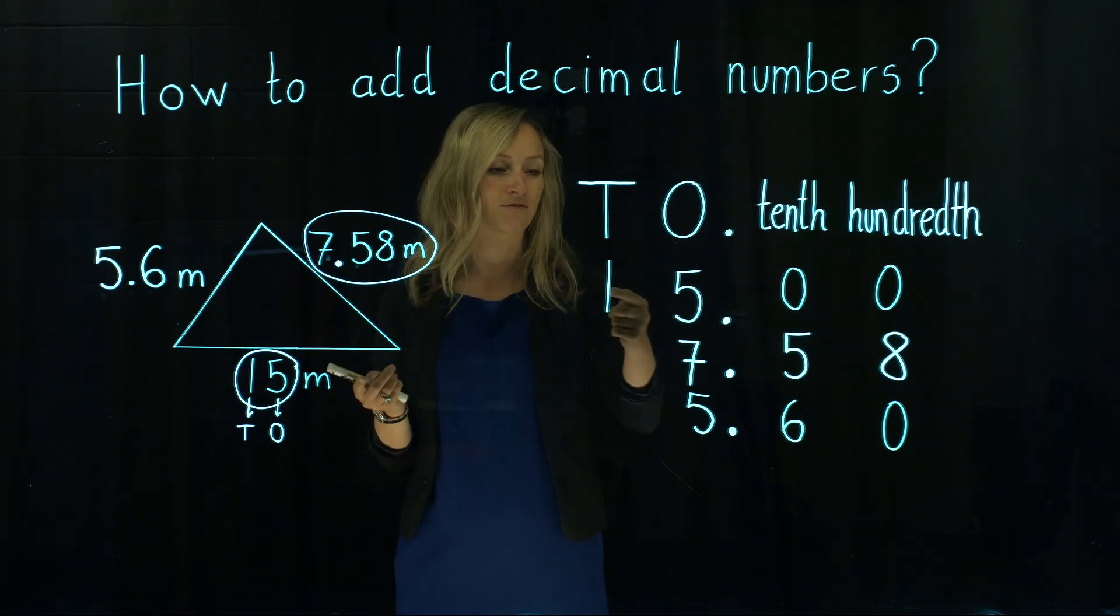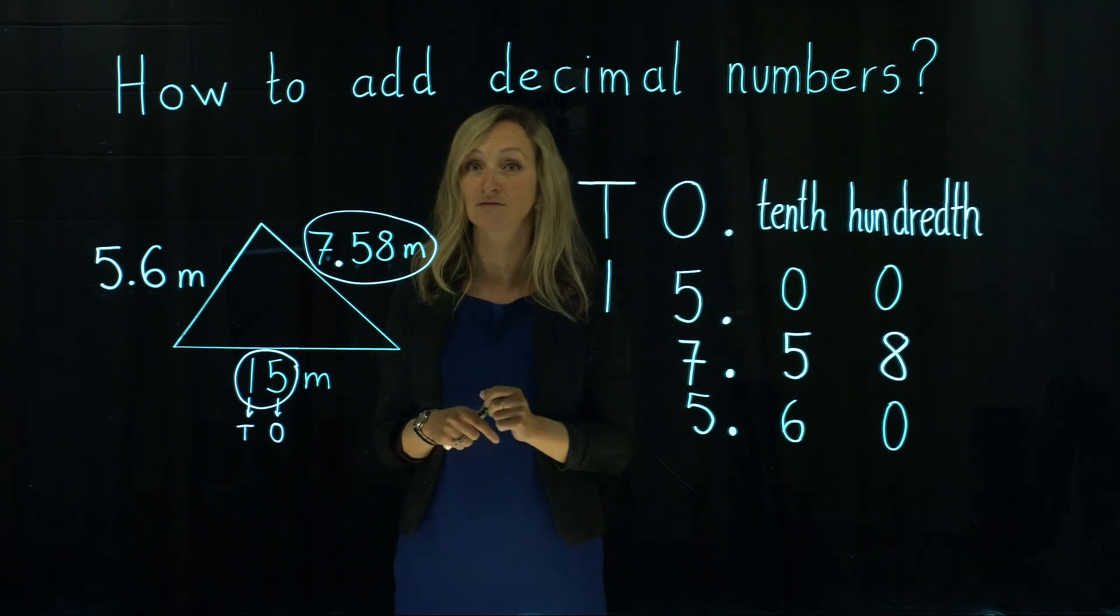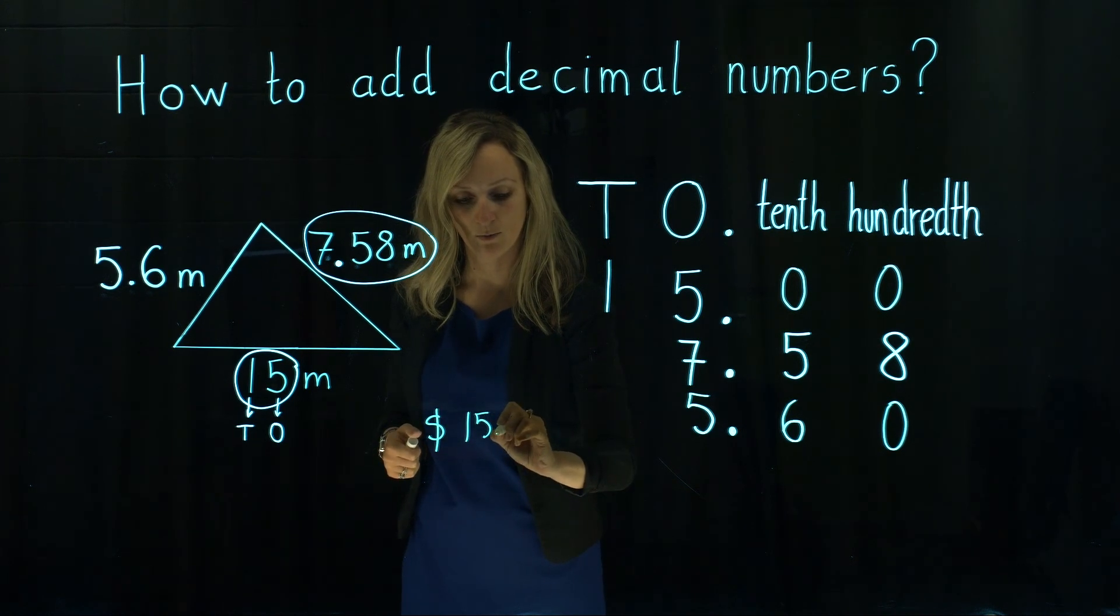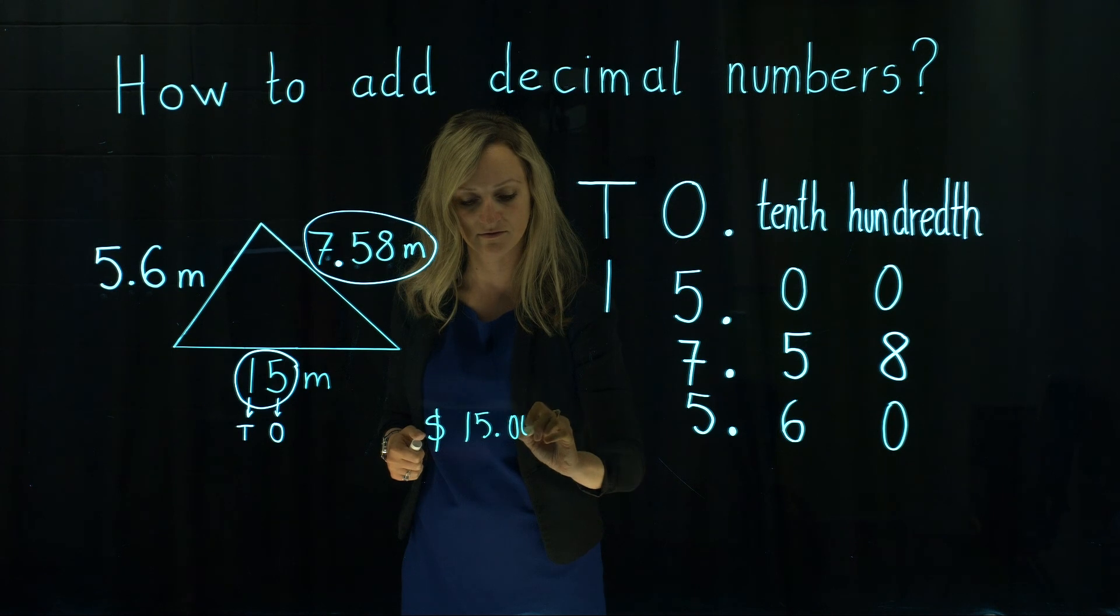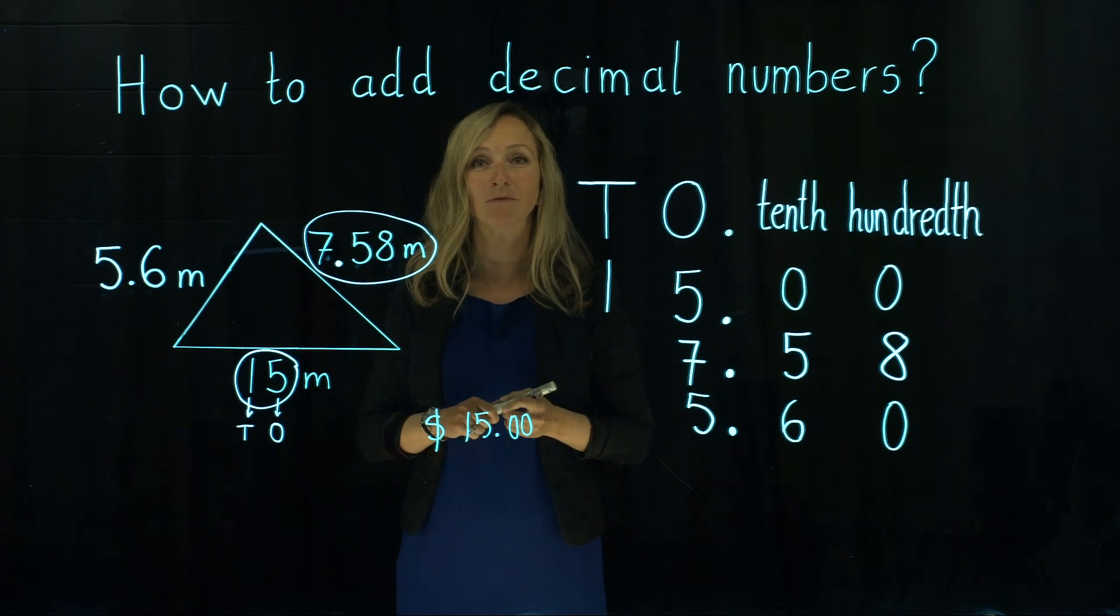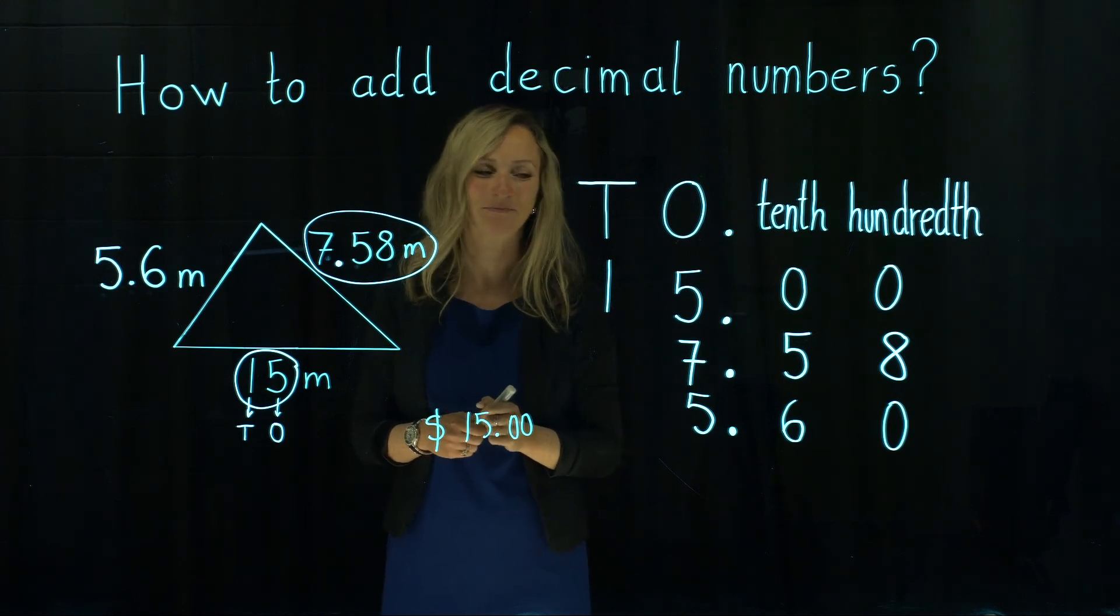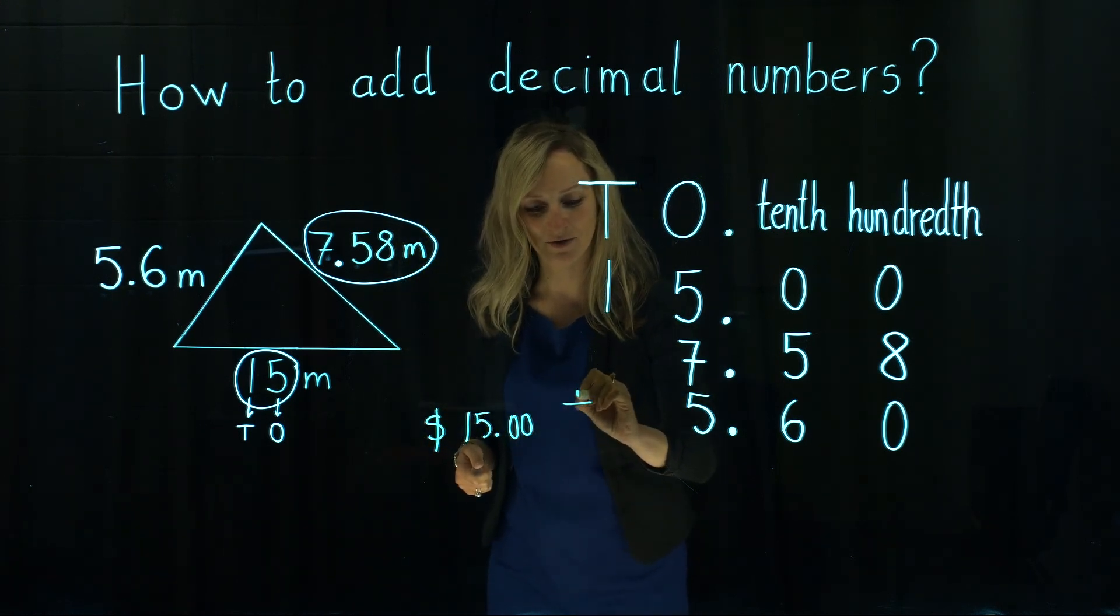In case that you have $15 on your bank account, on your bank account will be always written 15.00 but that actually means that you've got just $15 on your bank account. So now let's go back to our question.